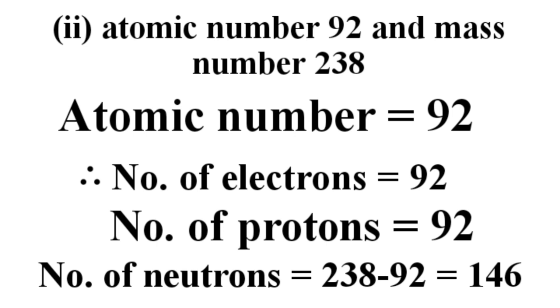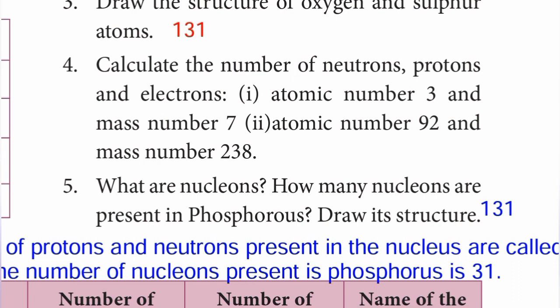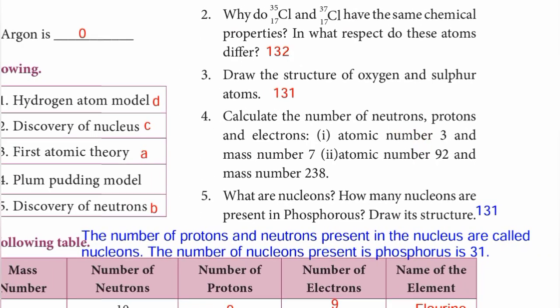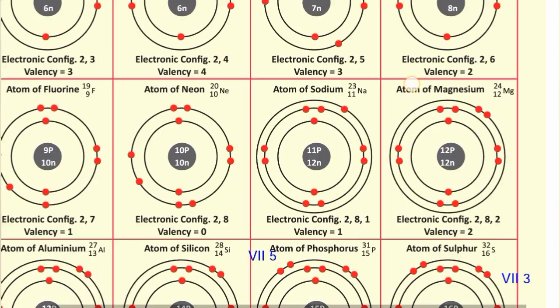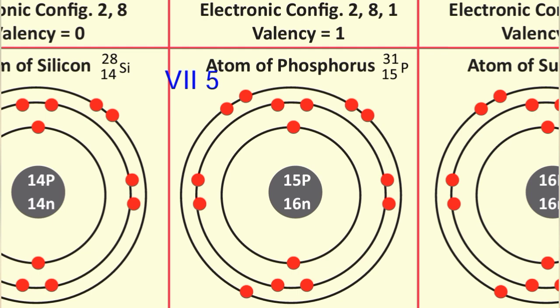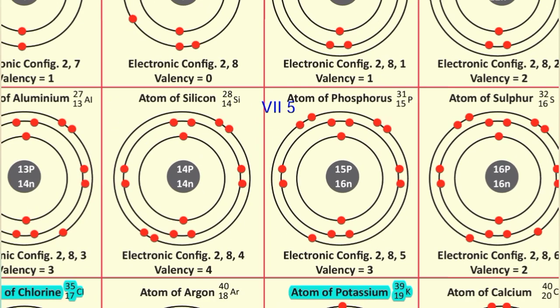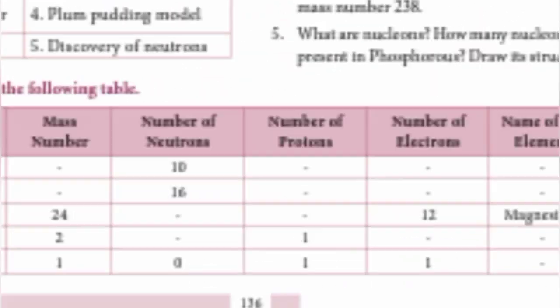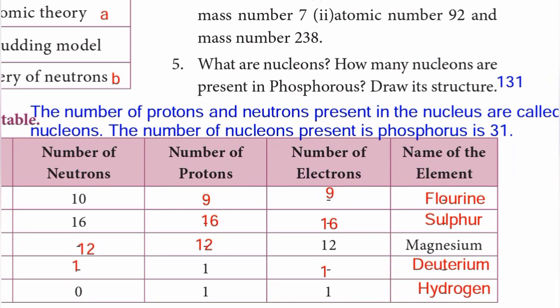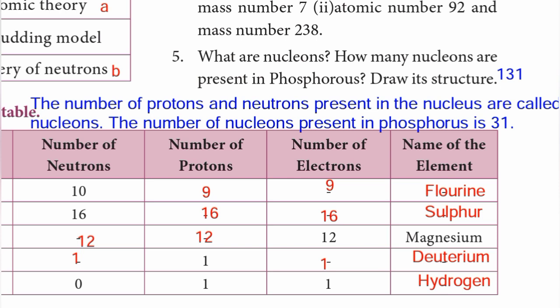Question number 5: what are nucleons? How many nucleons are present in phosphorus? Draw its structure. The number of protons and neutrons present in the nucleus are called nucleons. The number of nucleons present in phosphorus is 31. The structure is on page number 131. Fifth question over.